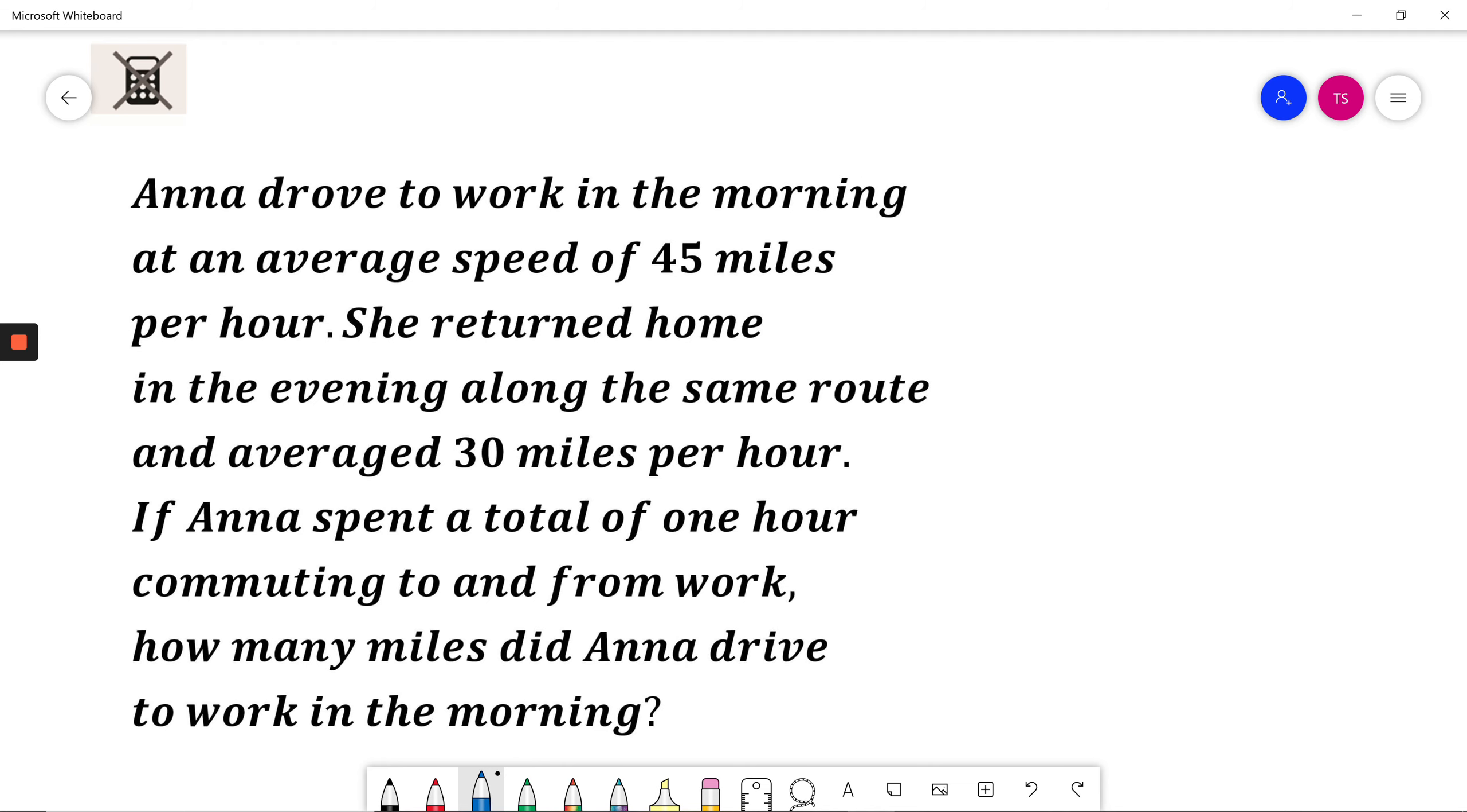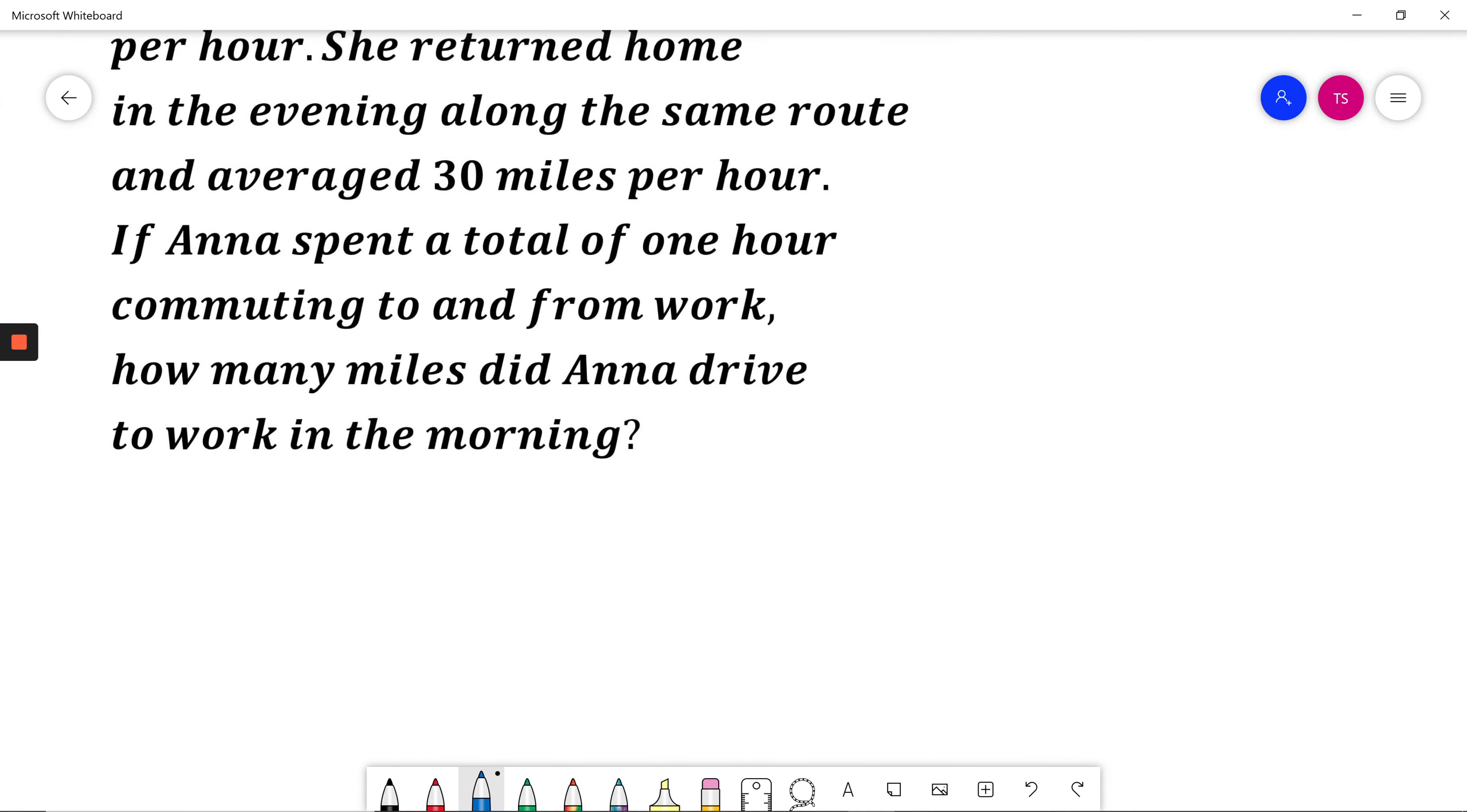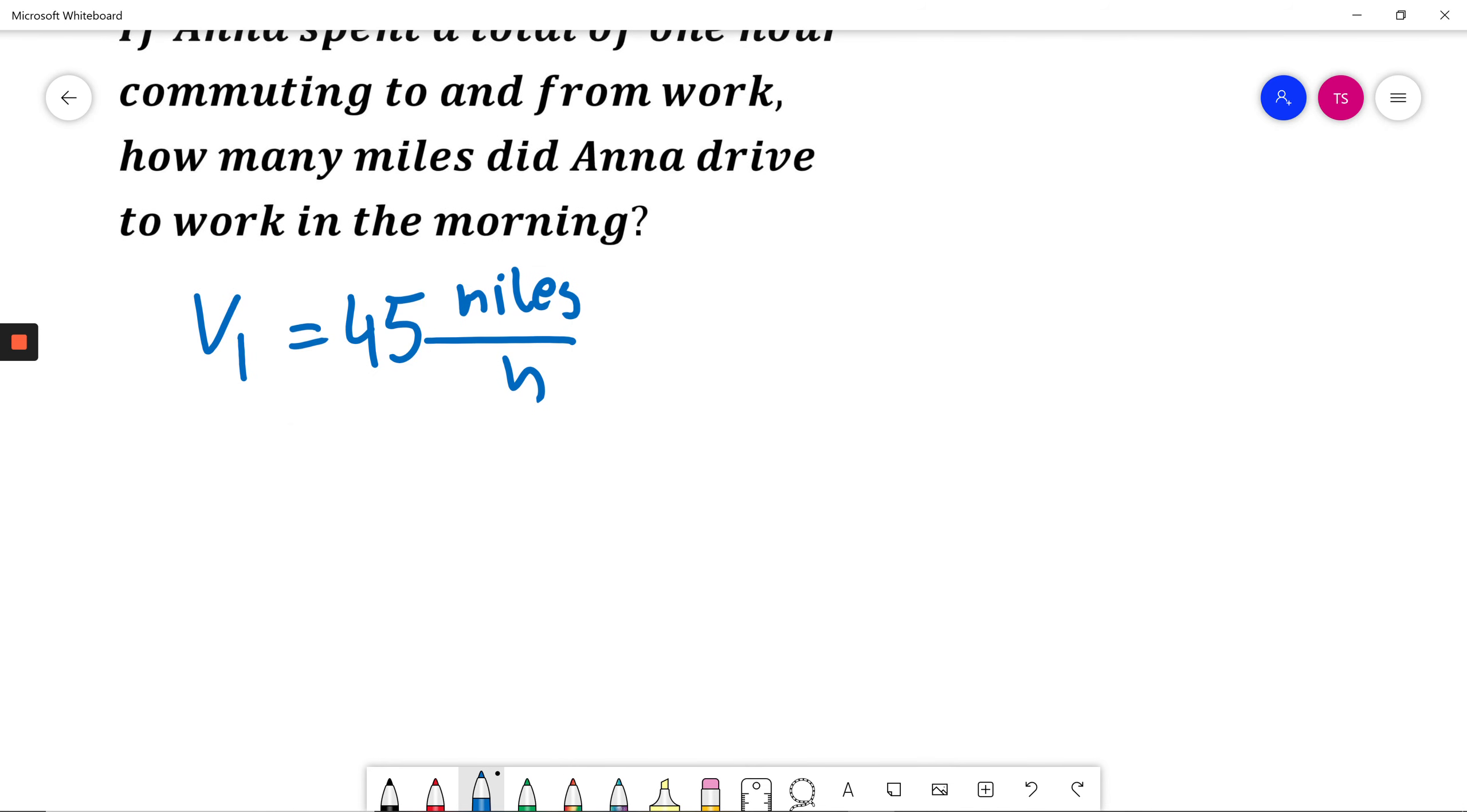Okay I will solve it now. Anna drove to work in the morning at an average speed of 45 miles per hour. So my speed one, V1, will be 45 per hour. And returned along the same route average 30 miles per hour. So V2 coming back is 30 miles per hour.